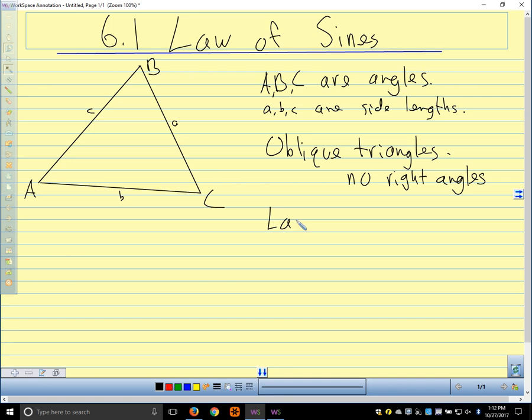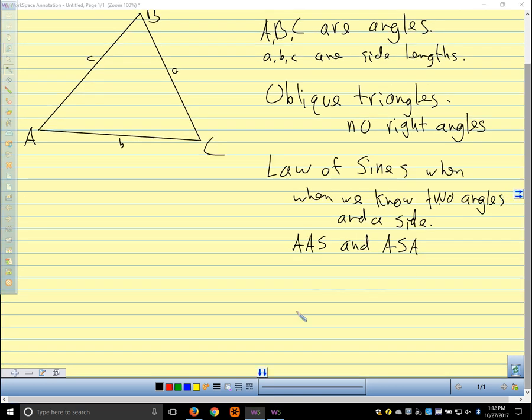And law of sines, we're going to use for when we have two angles and a side. So we're going to use it on angle-angle-side triangles and angle-side-angle triangles. We can sometimes use it on side-side-angle triangles, but we get a possible ambiguous case with side-side-angle.